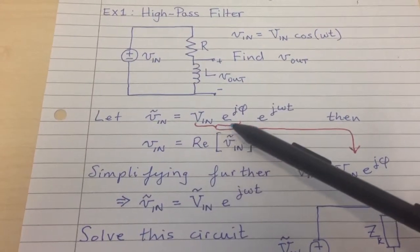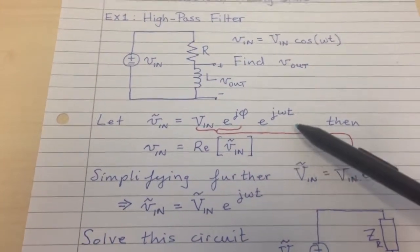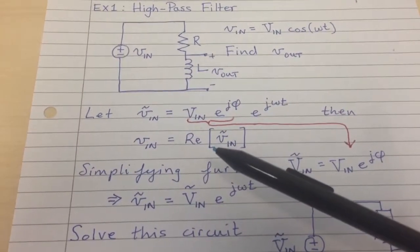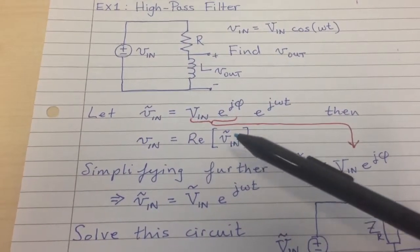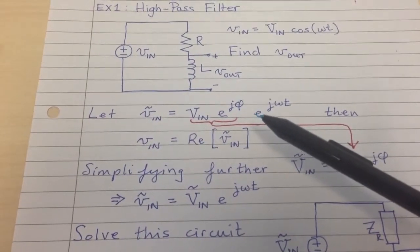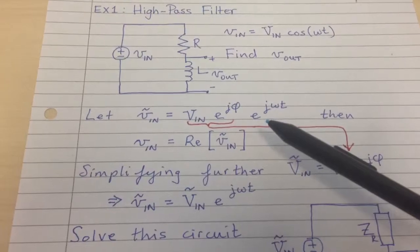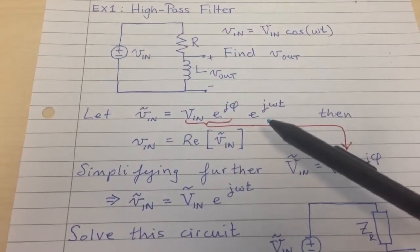So we're going to take V_in e^(jφ) times e^(jωt). And you'll see that V_in is just the real part of this complex number, because that e^(jφ) e^(jωt) can be written out as cosine(ωt + φ) plus j sine(ωt + φ).